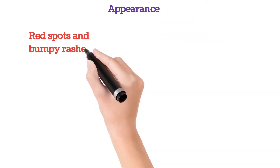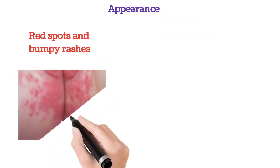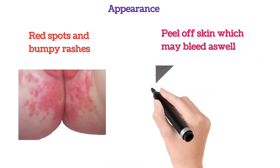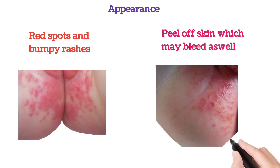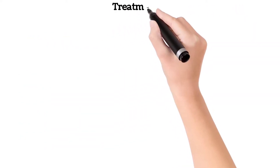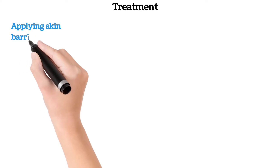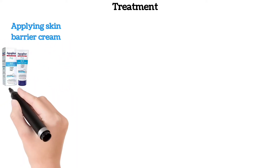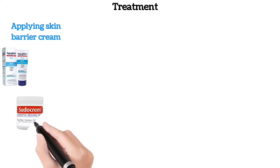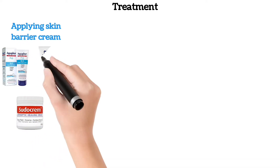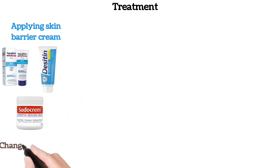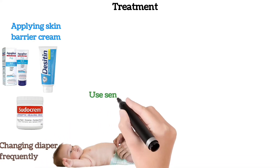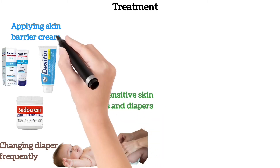Appearance: red spots and bumpy rashes, with peeling off skin which may bleed as well. Treatment includes applying a skin barrier cream and changing the diaper frequently. Use sensitive skin wipes and diapers.